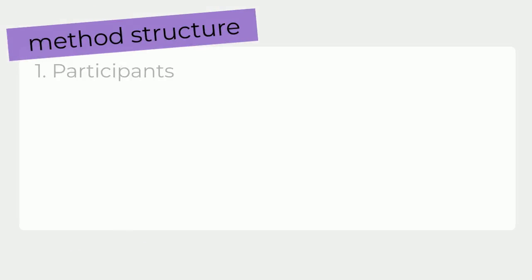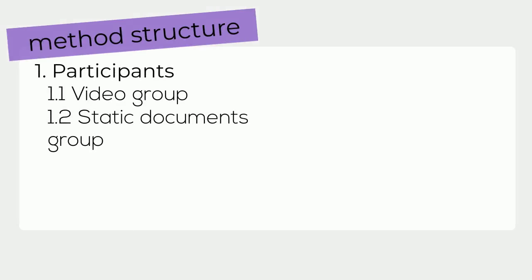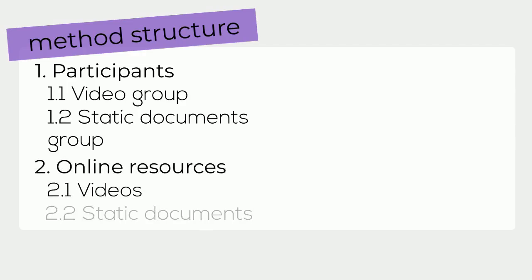How are we going to structure this method? Firstly, we need a participant section, with subsections for the video group and the static documents group. Then let's add a section for the materials, which in this case are the online resources. Again, we need subsections for the two resource types.